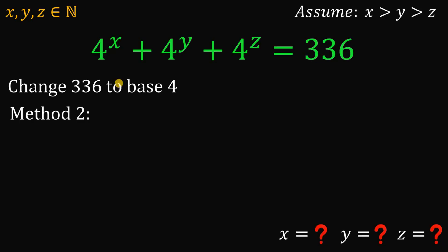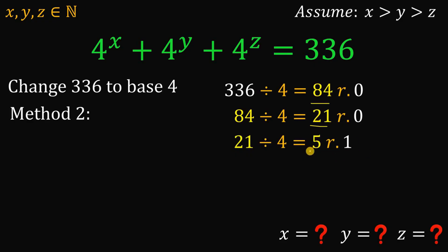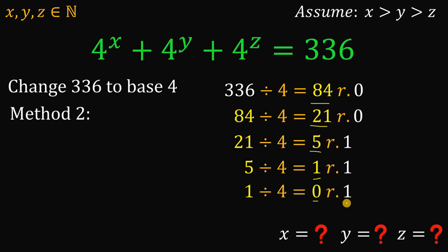Now, how about the second method to convert 336 to base 4? If you don't want to memorize the powers of 4, here's the second approach. Get the number 336, then divide by 4 — you get 84 with a remainder of 0. Take that quotient and divide by 4: 84 divided by 4 is 21, remainder 0. Then 21 divided by 4 is 5, remainder 1. Then 5 divided by 4 is 1, remainder 1. Then 1 divided by 4 is 0, remainder 1. We stop here because dividing 0 by 4 gives 0 with remainder 0 — that's nonsensical to continue.